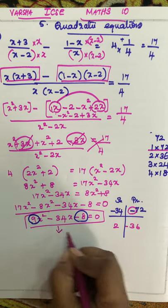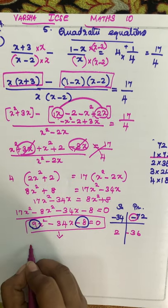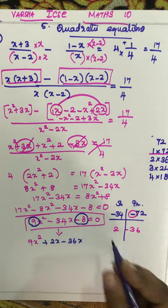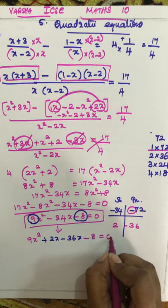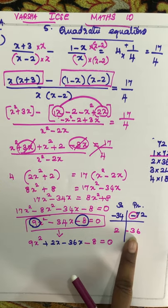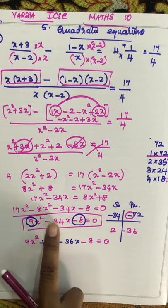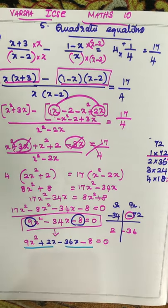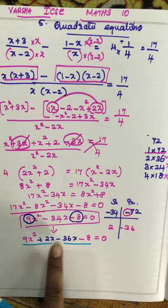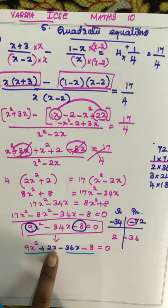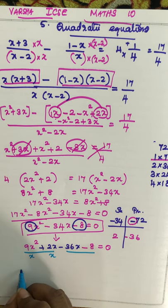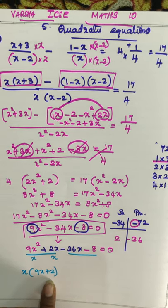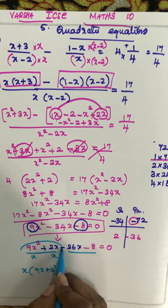So I am going to replace minus 34x. How will you write? This is 9x squared; for minus 34x, I am going to write plus 2x minus 36x, and minus 8 equal to 0. We have selected this pair for the middle term, for minus 34x. Now I am going to do grouping. For grouping, you group this term and this term. For 9x squared and 2x, you can take x as common.